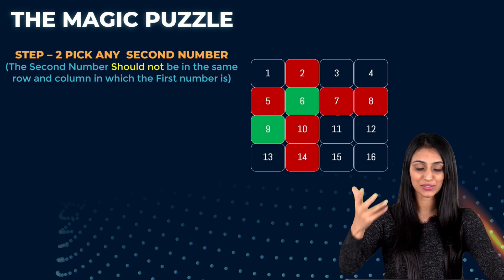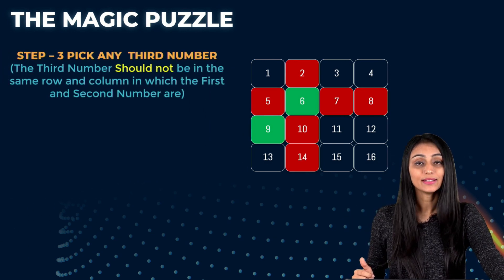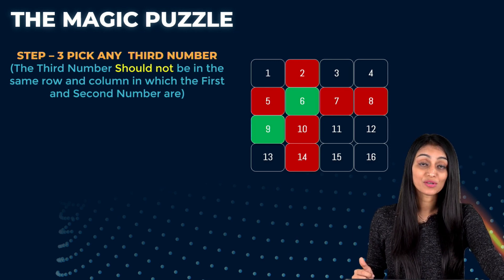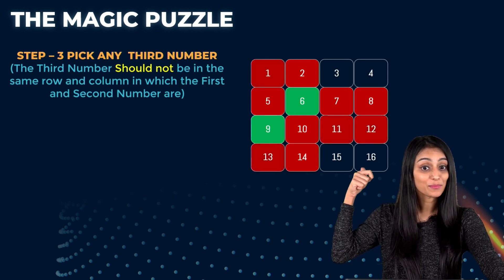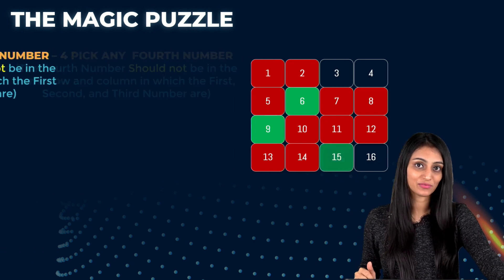Like this way you can pick up any of the numbers. Now time to pick up the third number. In a similar manner the third number should not be in the same row and column in which the first and second number are. So same way we can see that the numbers which are highlighted in red. We cannot pick up any numbers from here. So let's say I pick up 15.